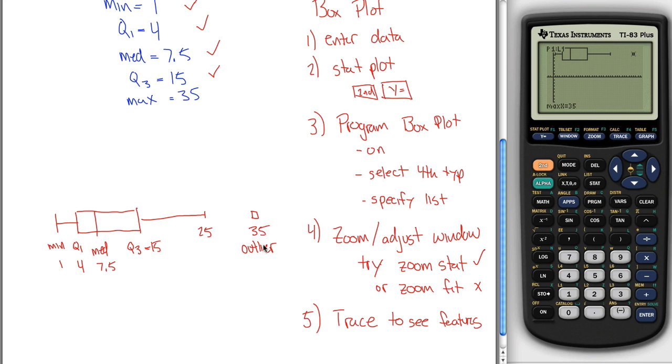35 was the max. It's also an outlier. The reason 35 was an outlier, you can figure that out by finding your fences. So maybe I'll finish up by doing that and then we'll end this video. Your lower fence. So how calculator determined this outlier.